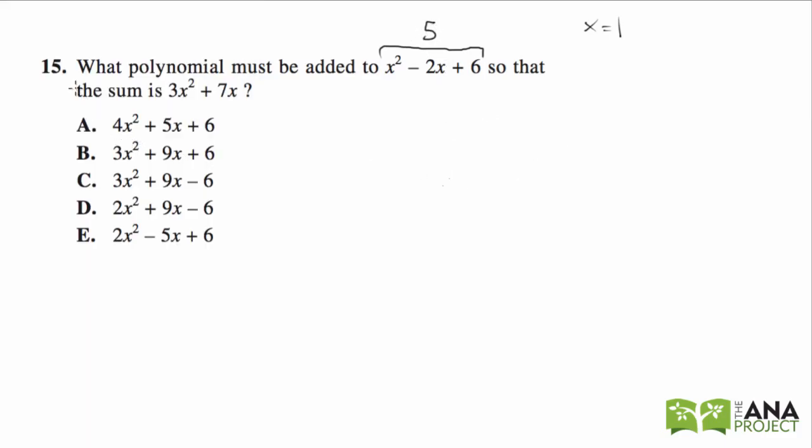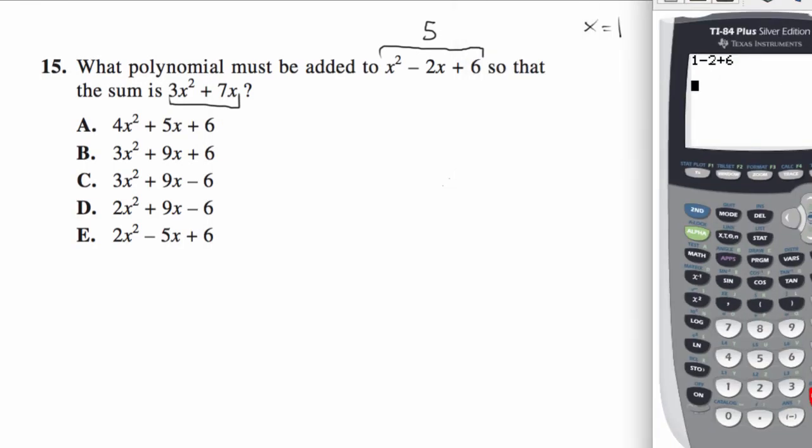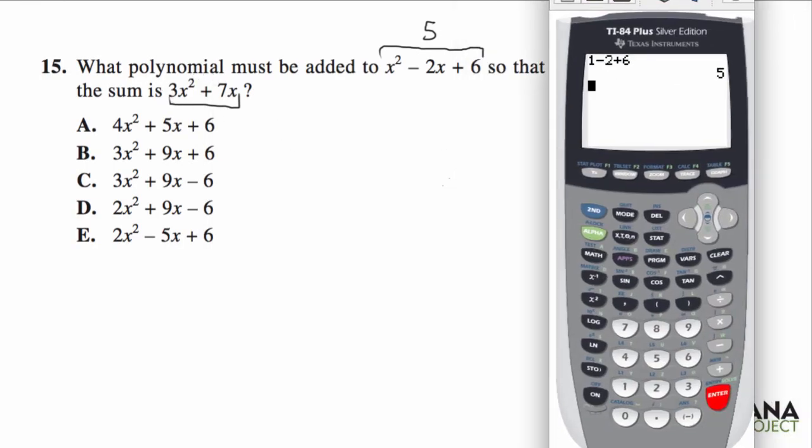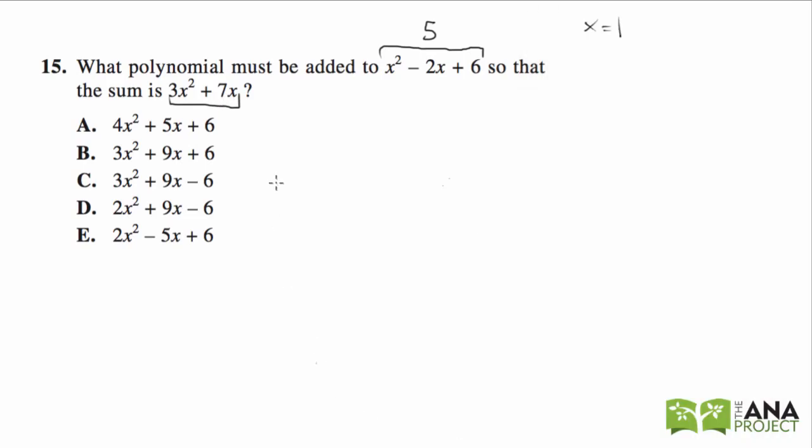So what number must be added to 5 so that the sum is—we can just use our calculator—3 times 1 squared, which is just 3, plus 7 times 1, which is 7, equals 10. So what must be added to 5 so that the sum is 10?